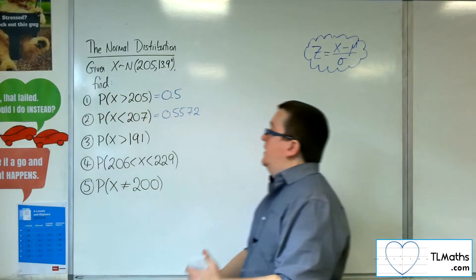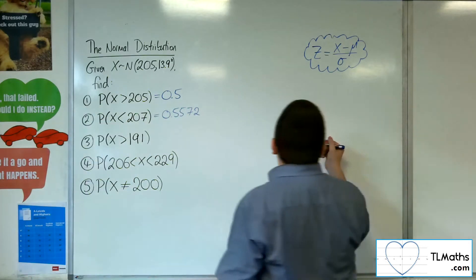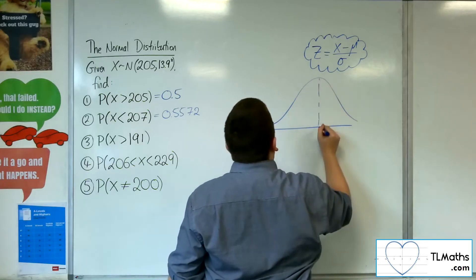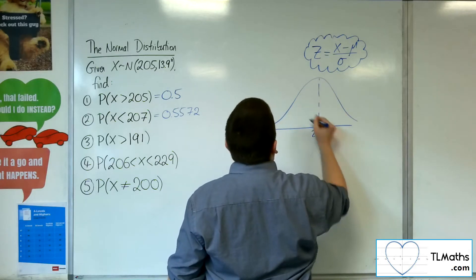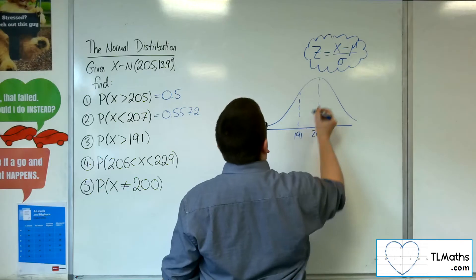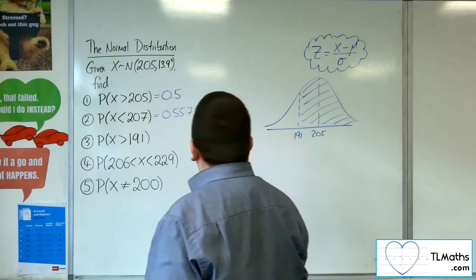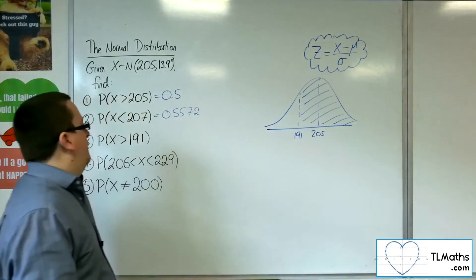X is greater than 191. Let's draw a diagram, see what we're dealing with. So 205, 191. I want greater than that value, so we're looking at a probability that's greater than 0.5, certainly.